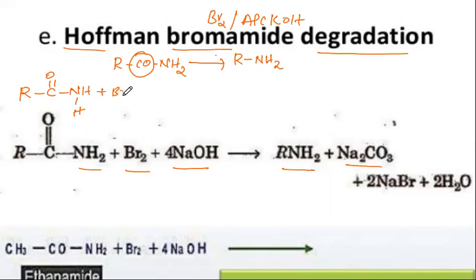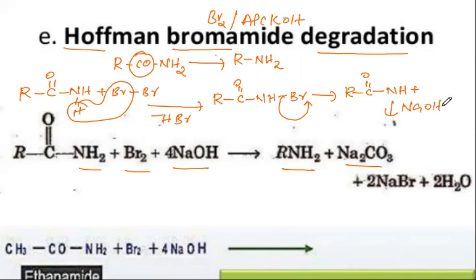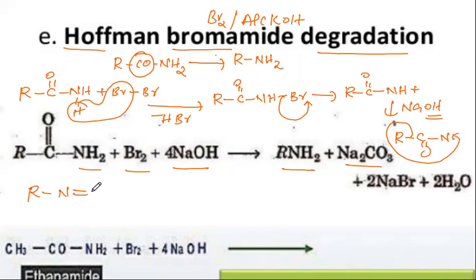When the amide reacts with a bromine molecule, one bromine atom and one hydrogen atom combine to leave as HBr, leaving R-C(=O)-NHBr. Since bromine is electronegative, it pulls electron density, and with sodium hydroxide base providing OH⁻ (acting as proton acceptor), an alkyl group migration occurs from carbon to nitrogen — this is the major step — forming R-N=C=O (an isocyanate intermediate).